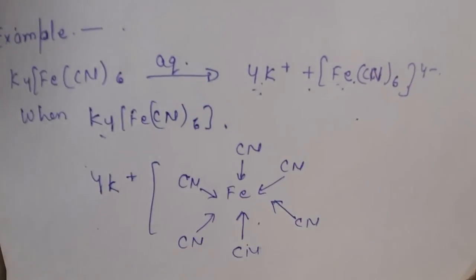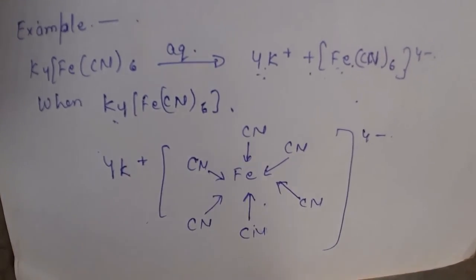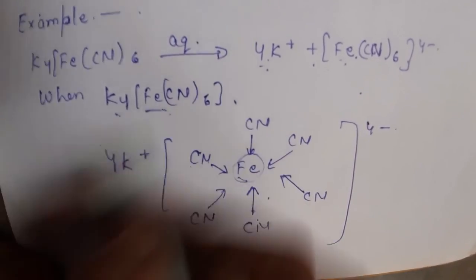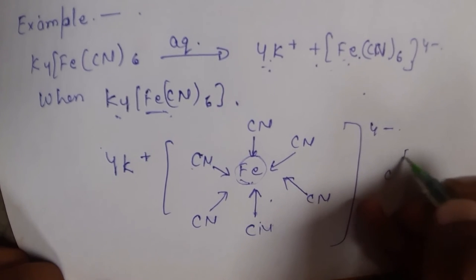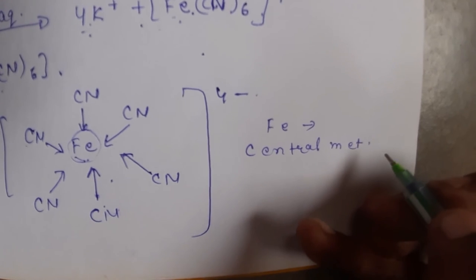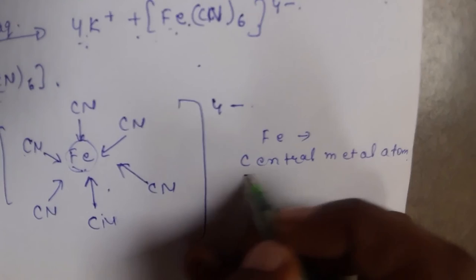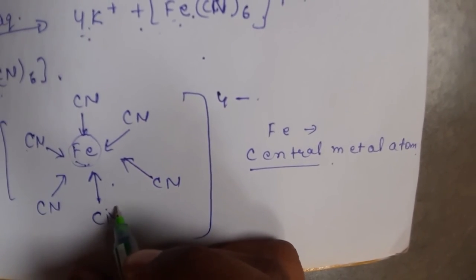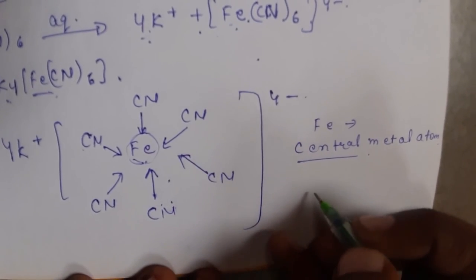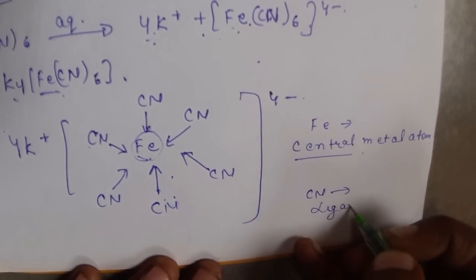If you ask what are ligands, we can see from the structure. The central atom is Fe — it is called the Central Metal Atom. Those who are donating electrons, who have lone pairs of electrons and are donating them, are called ligands.